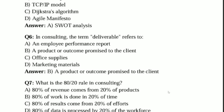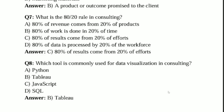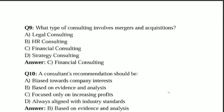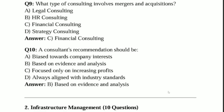Question 6: In consulting, the term 'deliverable' refers to — Answer B: A product or outcome promised to the client. Question 7: What is the 80/20 rule in consulting? Answer C: 80% of results come from 20% of efforts. Question 8: Which tool is commonly used for data visualization in consulting? Answer B: Power BI. Question 9: What type of consulting involves mergers and acquisitions? Answer C: Financial consulting. Question 10: Recommendations should be based on data and analysis.